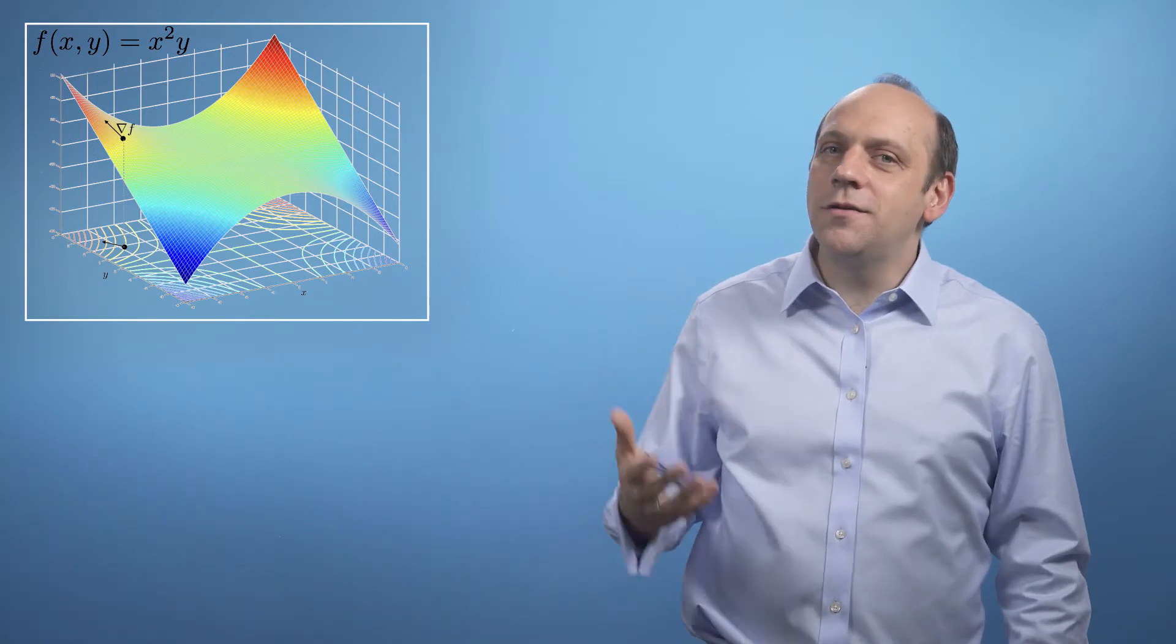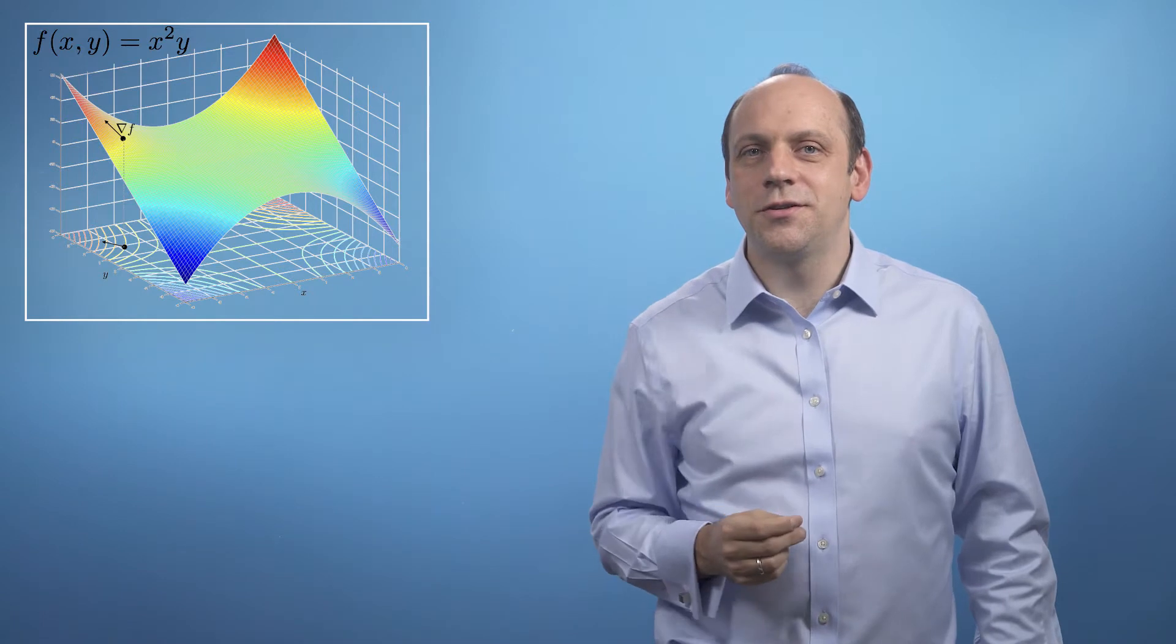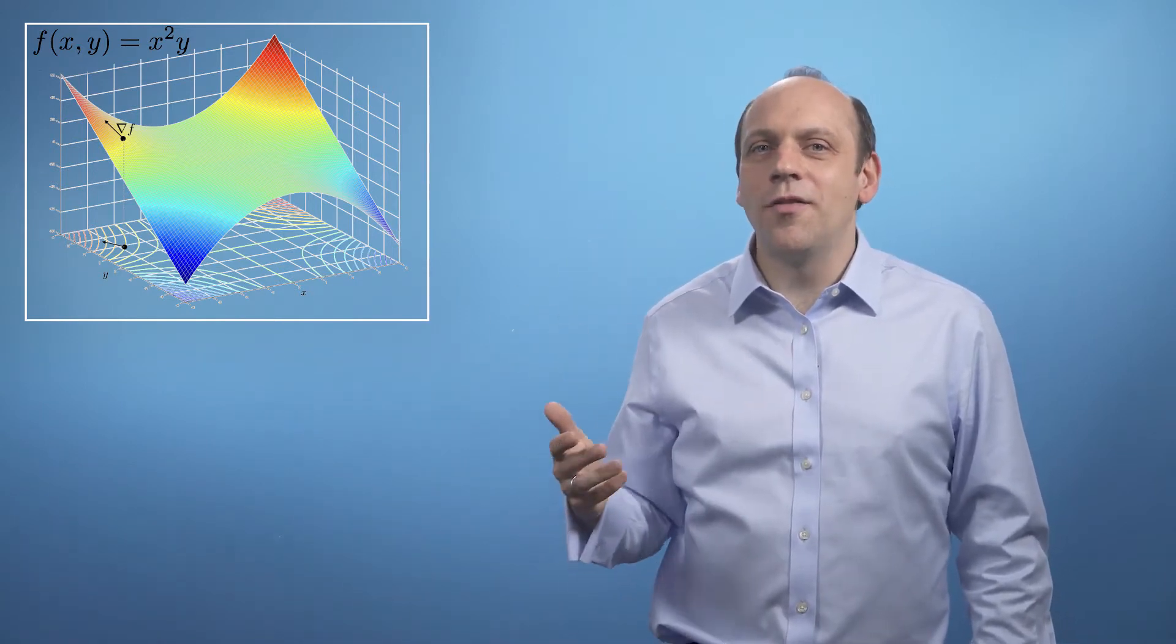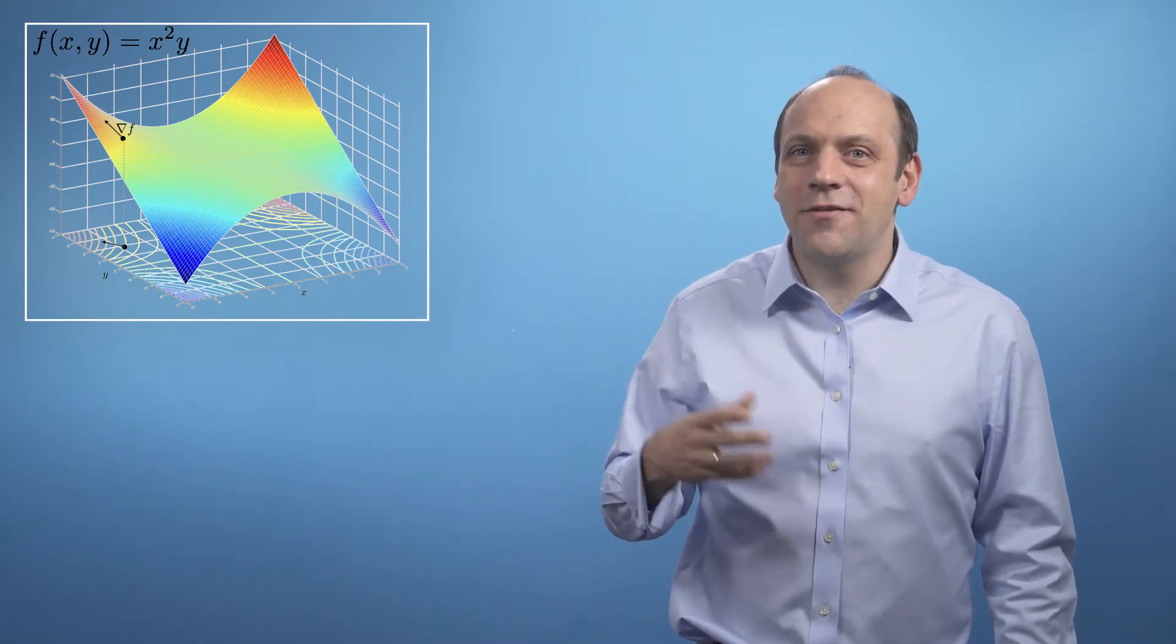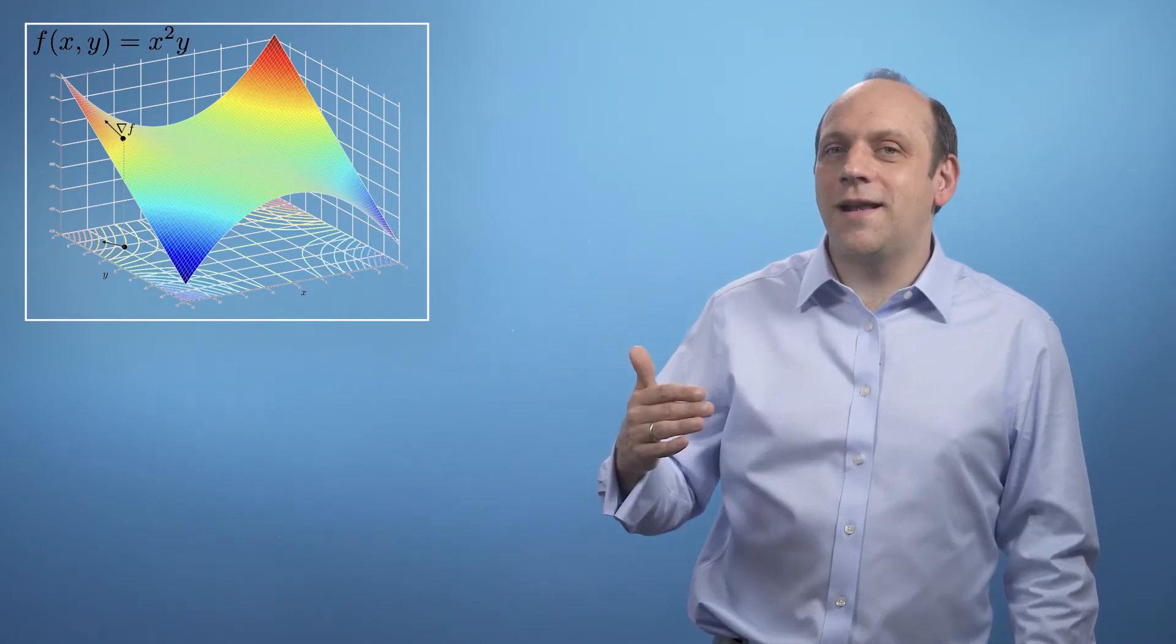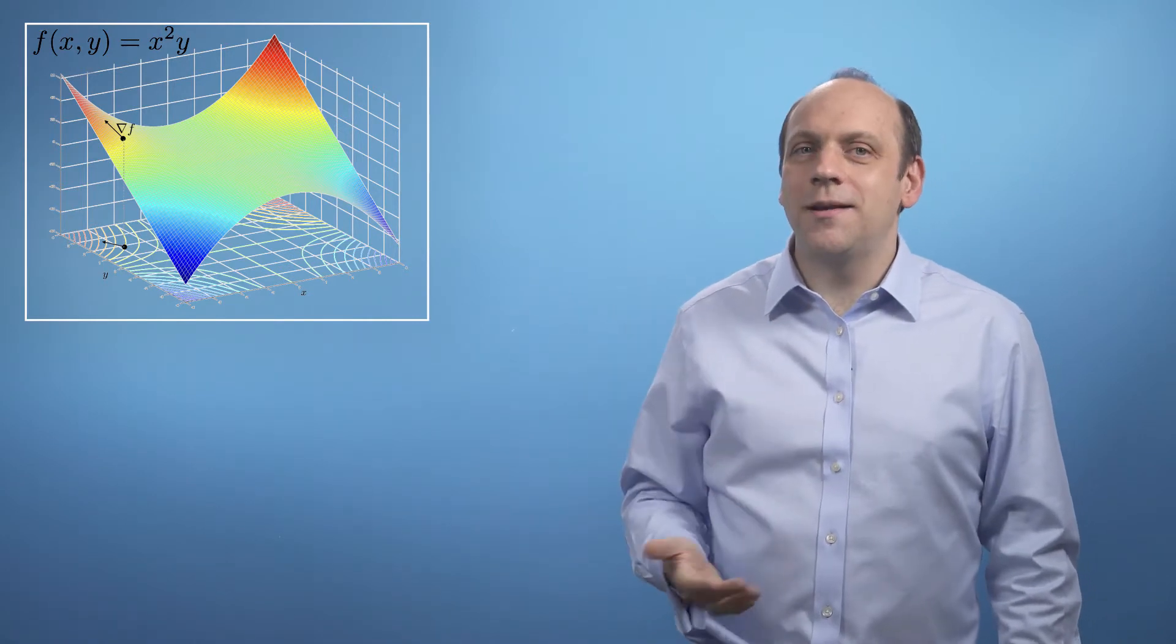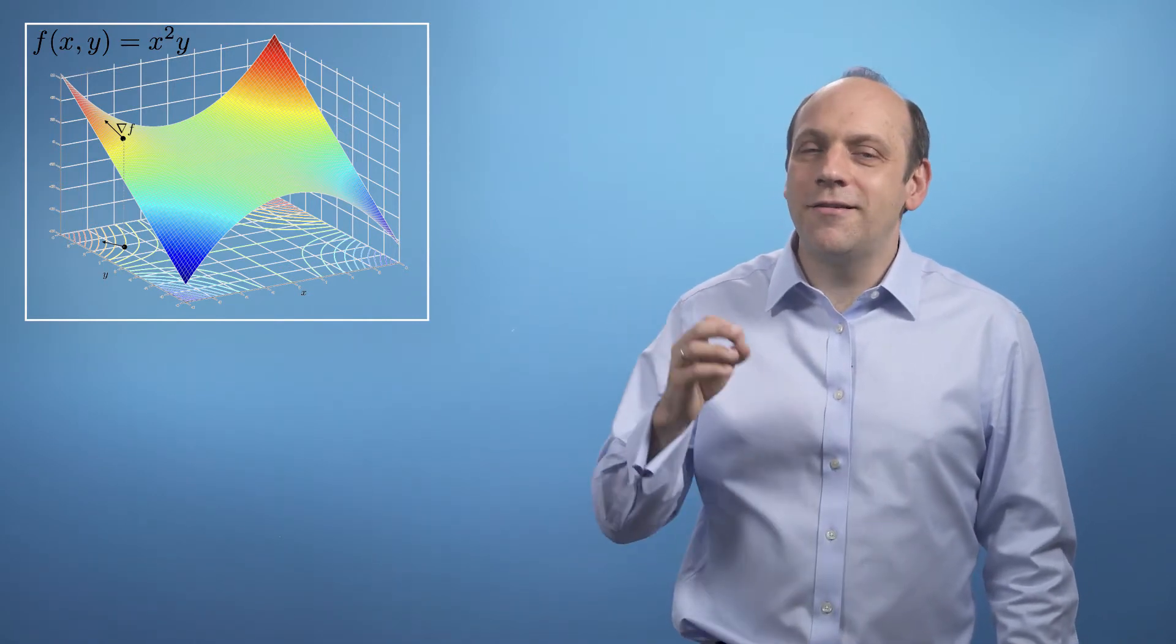And like Newton-Raphson, we can use the gradient to go from some trial point down towards the solution. But in Newton-Raphson, we're trying to find the zero point. Here we don't know what the minimum value of the function is, so we don't know how far down we need to go. It's as if we're somewhere on our mountain, but we don't know the altitude of the valley.